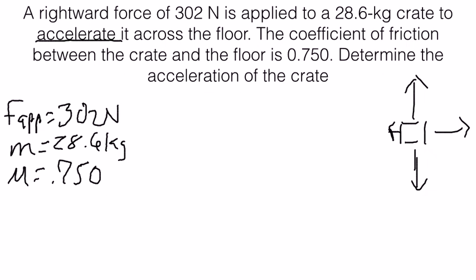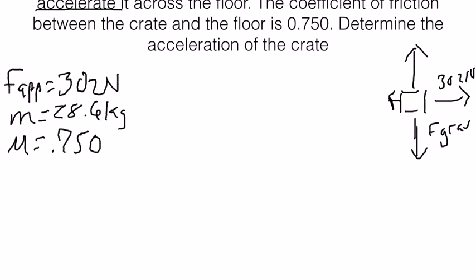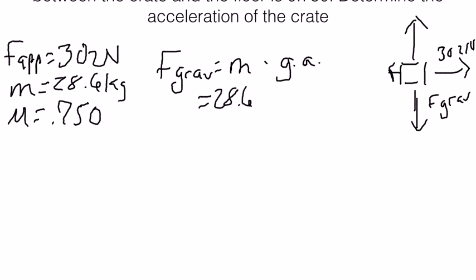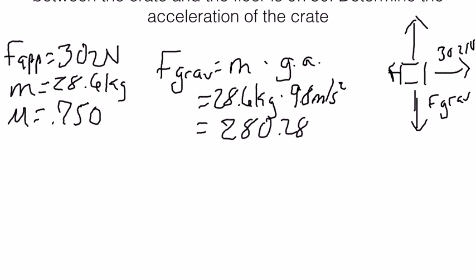When solving this equation, we first need to look at the applied force so we can backward-solve for different pieces. We know the rightward force is 302 newtons. Now we need to solve for the force of gravity: F_gravity equals mass times gravitational acceleration, so 28.6 kilograms times 9.8 meters per second squared gives us 280.28 newtons.